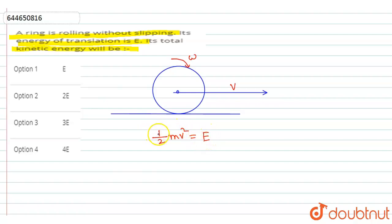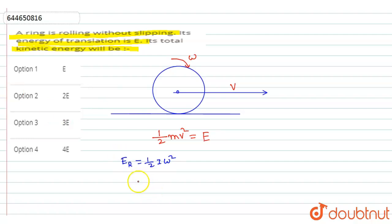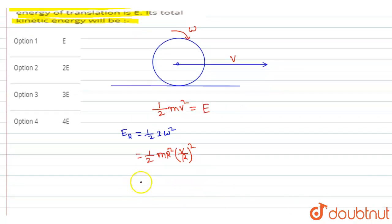We need to find the rotational energy. Total energy equals translational plus rotational. Rotational energy is equal to ½Iω², where I is the moment of inertia. For a ring, moment of inertia I = mr², and omega = v/r.